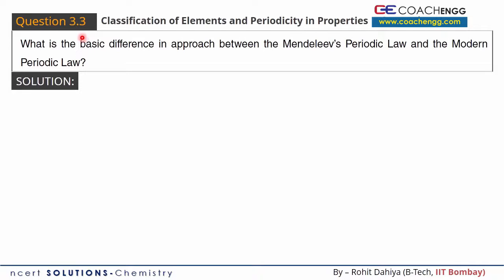Hello friends, I will now discuss question number three of the topic 'Classification of Elements': What is the basic difference in approach between Mendeleev's Periodic Law and the Modern Periodic Law?